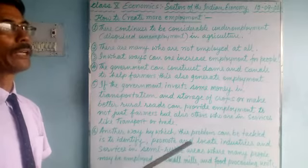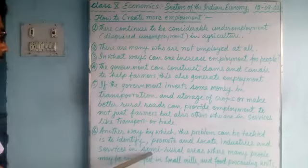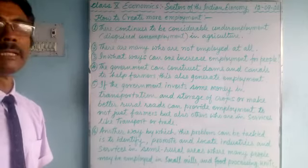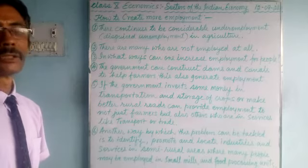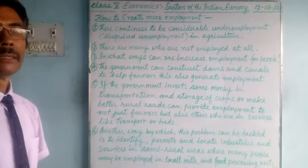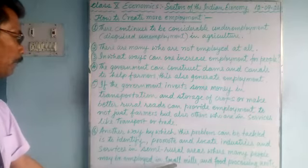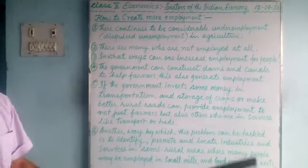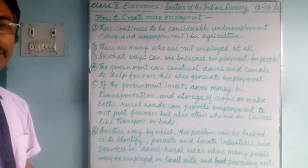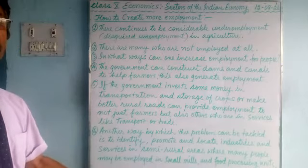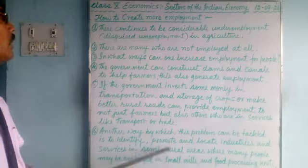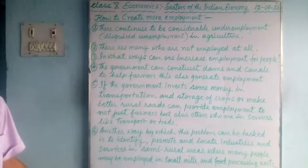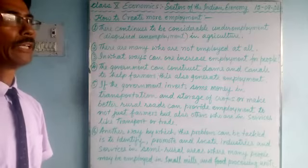In semi-rural areas, where large numbers of people live, many people may be employed in small mills — floor mills, saw mills, edible oil mills, and rice mills. Food processing units or small food processing factories can also be set up by the government where people get employment. This will help farmers as well as generate employment for other people, and in this way more employment could be created.